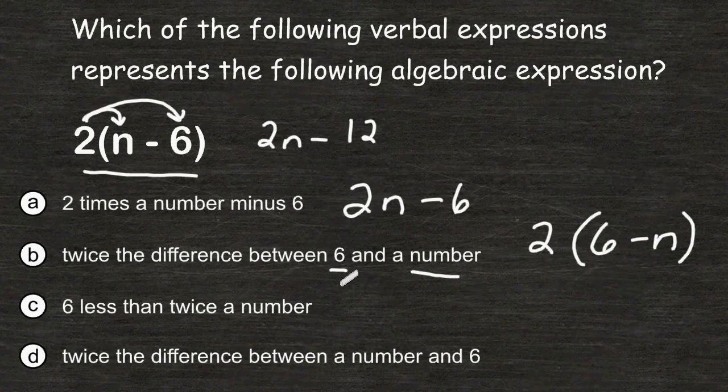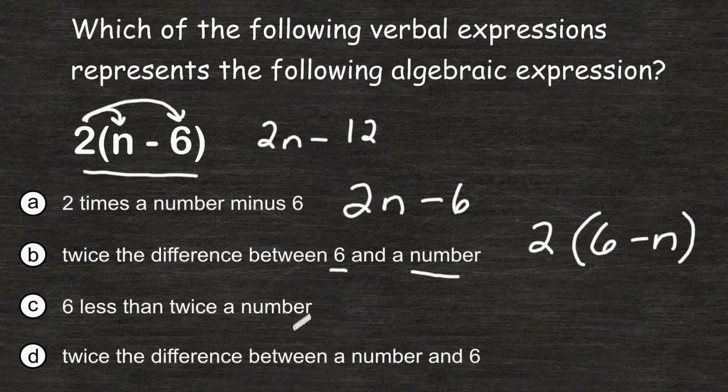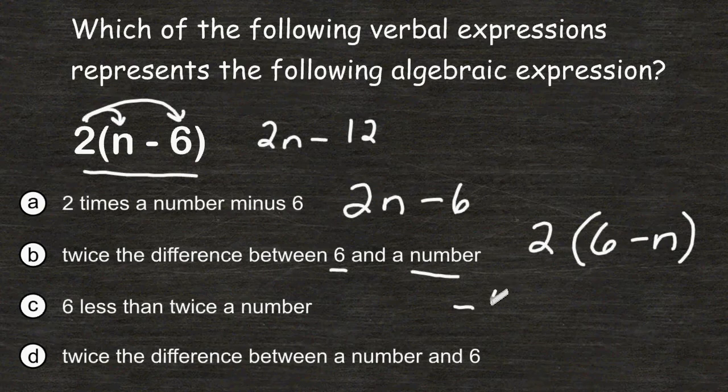For choice C, we have 6 less than twice a number. Well, 6 less always means minus 6, and in this case we have to ask ourselves minus what? Well, it says twice a number, which would be 2n.